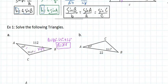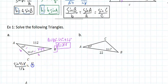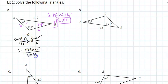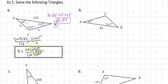Beta is 180 minus 65 minus 93.2, which gives 21.8 degrees. Now that I know all the angles, I need to find the missing side. This is side B because it's opposite angle beta, and this is side A. Taking the sine of 93.2 degrees divided by the opposite side, set equal to the sine of 65 degrees divided by A and cross-multiplying, A equals 112 times the sine of 65 degrees divided by the sine of 93.2 degrees, which turns out to be 101.67.